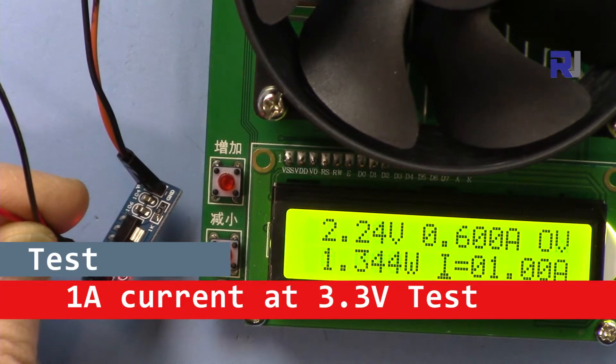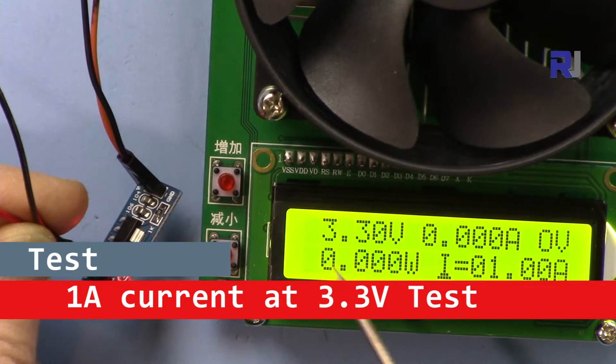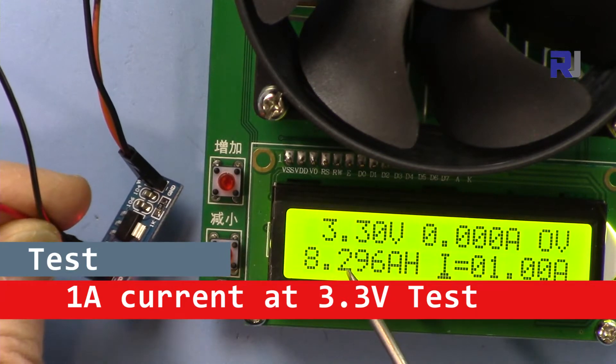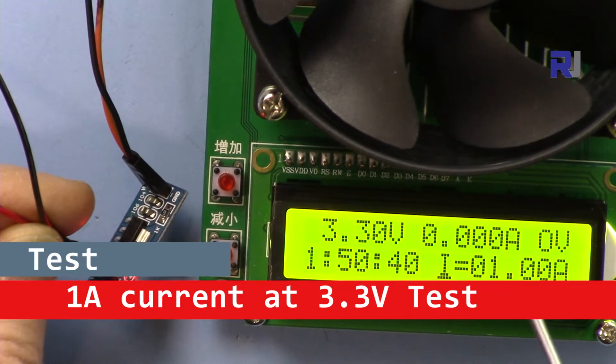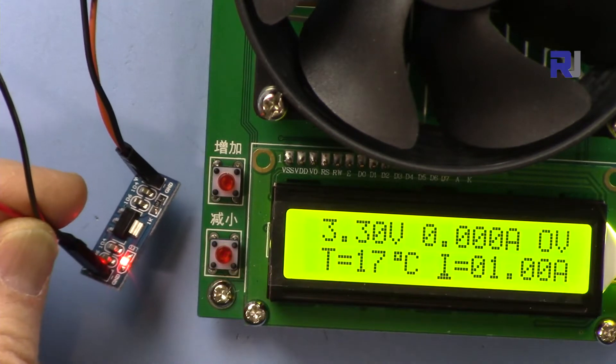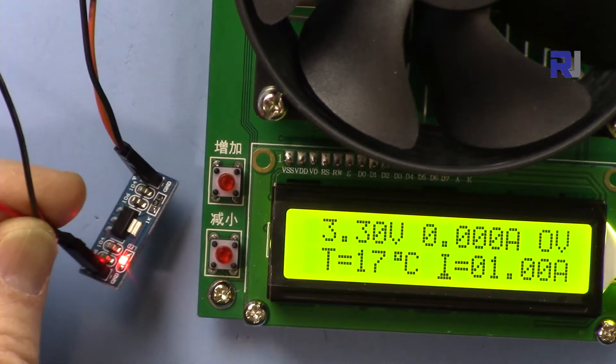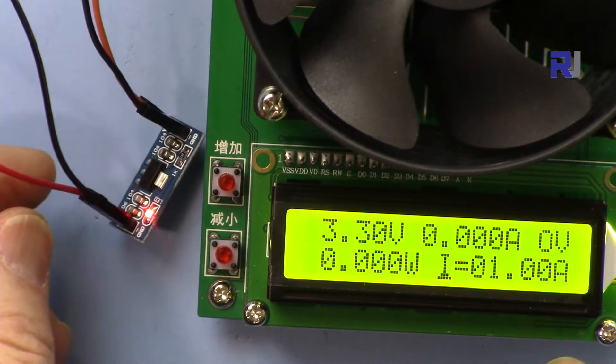So the voltage dropped to 2.4 volts and this shut off, so it means it cannot handle 1 ampere.